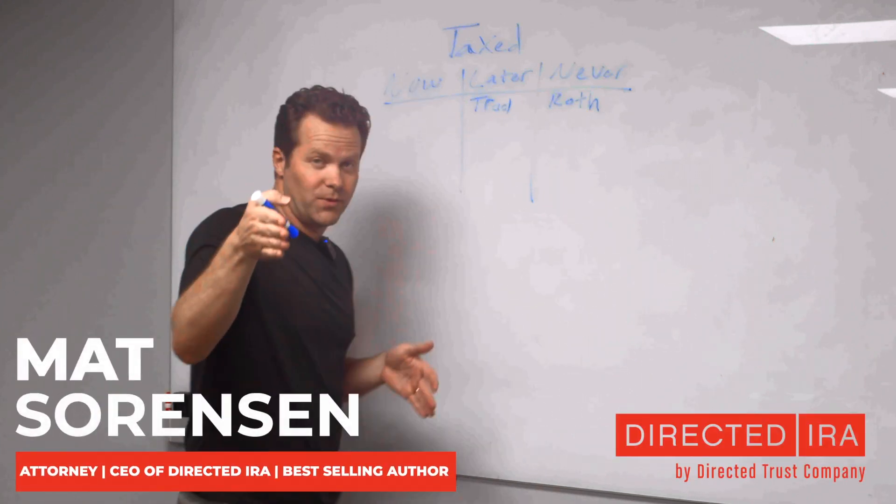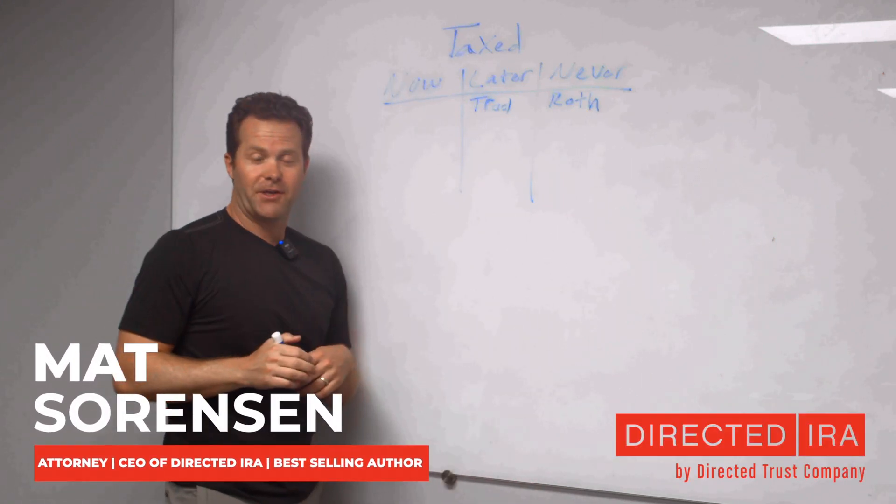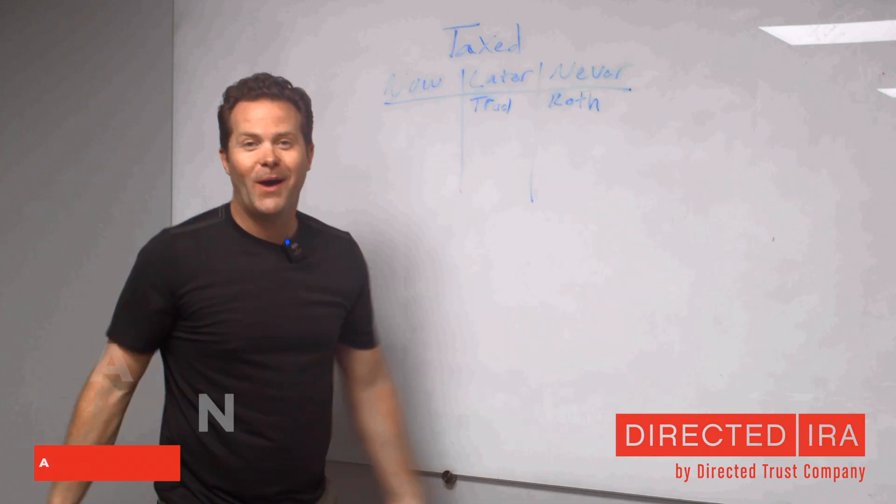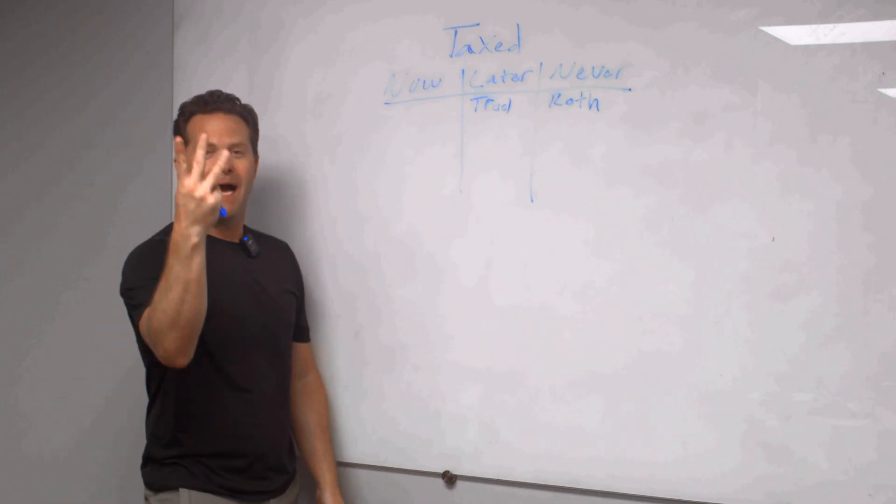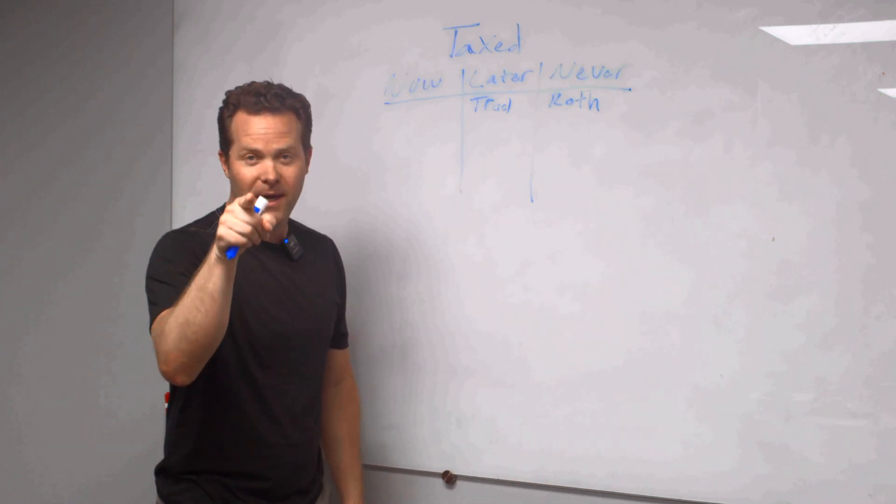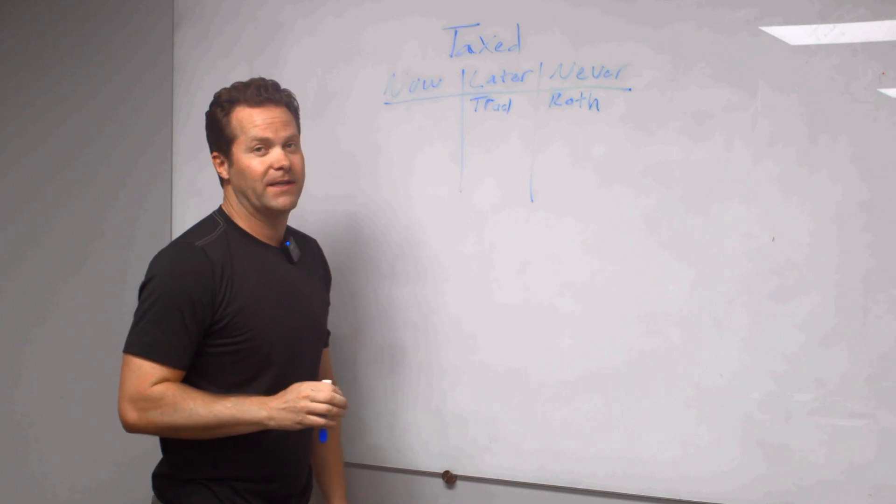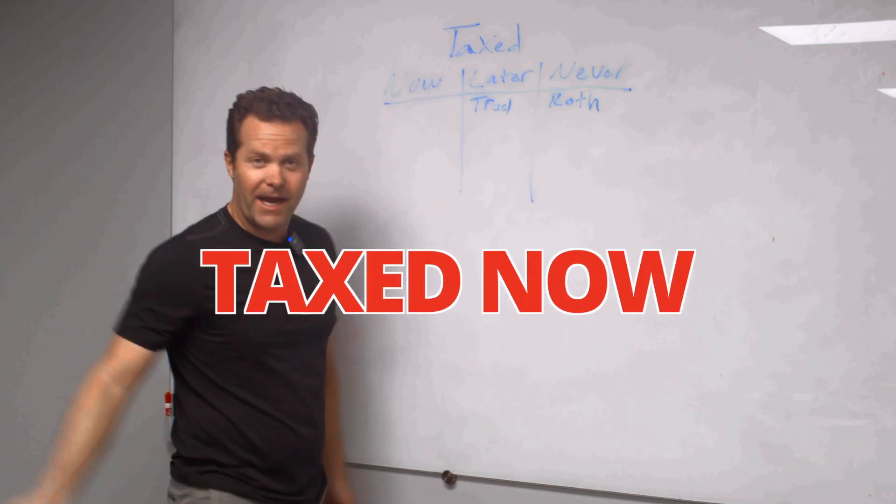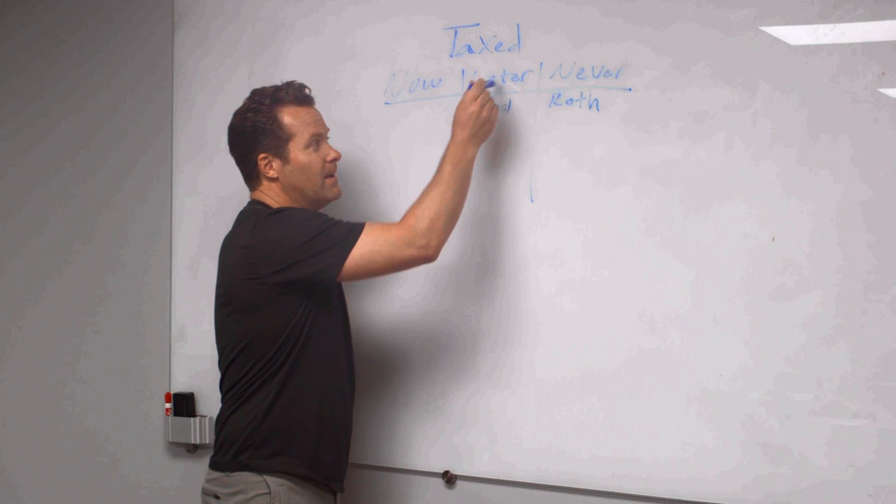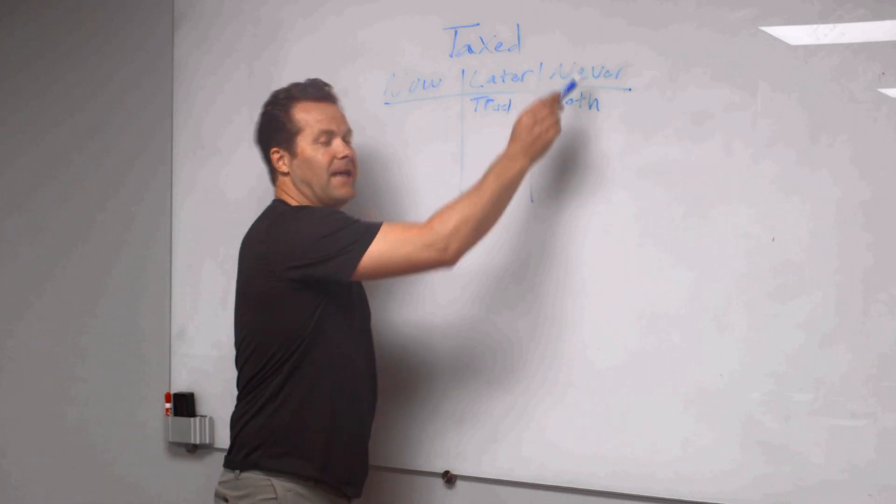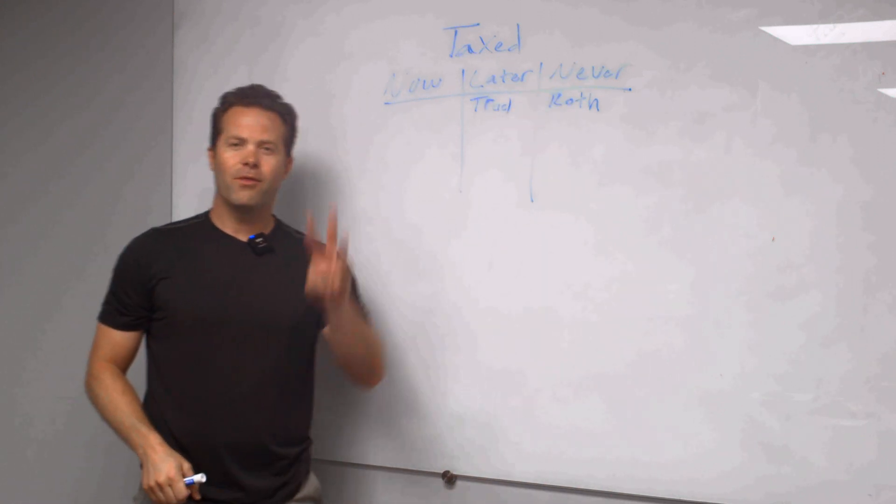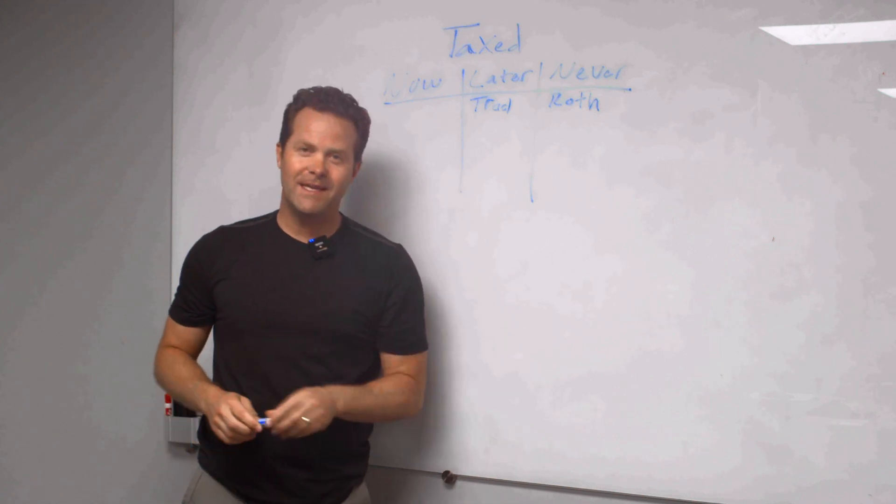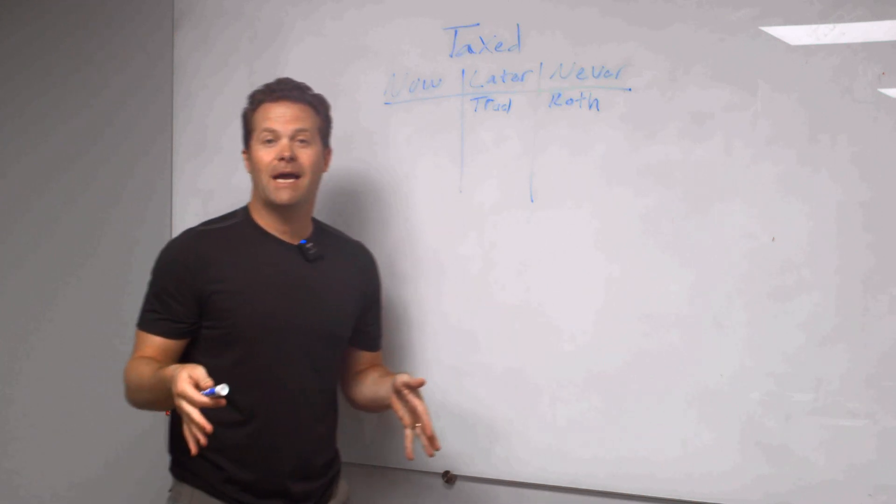Did you know that the IRS lets you choose how your money gets taxed on your investments? They gave you a choice. And there's three options in the tax code on how your money gets taxed when you're making money on investments. You can get taxed now, you can be taxed later, or you can be taxed never. Three choices, you get to decide. Let's go through your options and how it works.